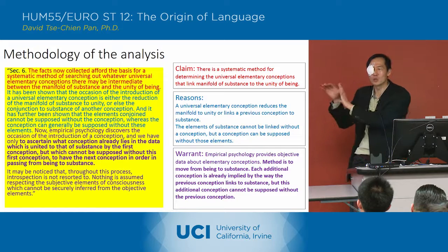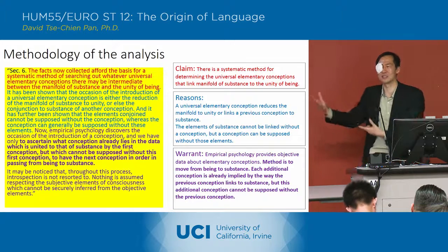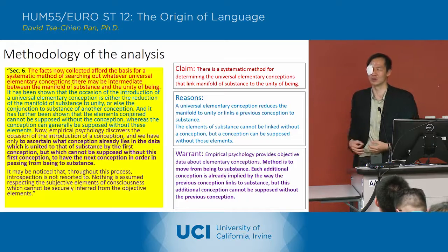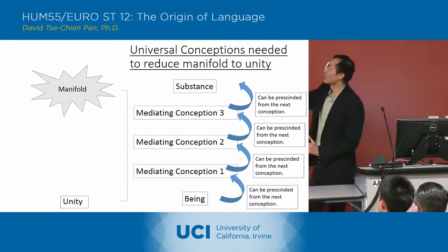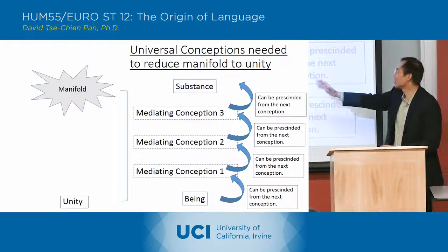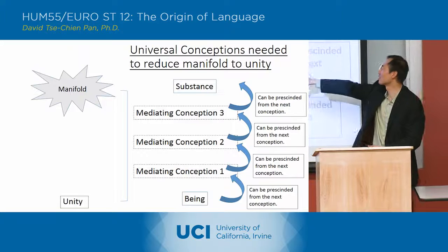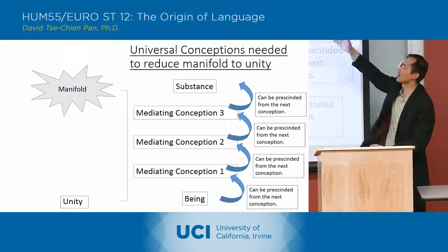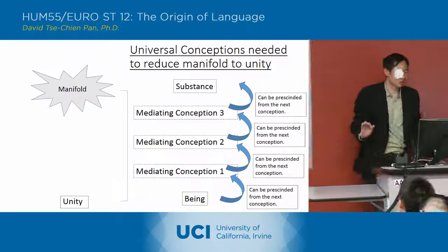He checks his method by asking: can this conception be prescinded from the next thing? If there's that relationship of precision, then he says we're on the right track, because that relationship of precision tells you this is a more elementary conception than the next one. So what he's got is this sort of ladder where he starts with being, looks at what is necessary for being to function, and then asks whether being can be prescinded from the next conception. He goes to this next conception, looks at what's necessary for it to function, and continues up until he gets to substance. He does actually have these three mediating conceptions, and we're going to go through that right now.